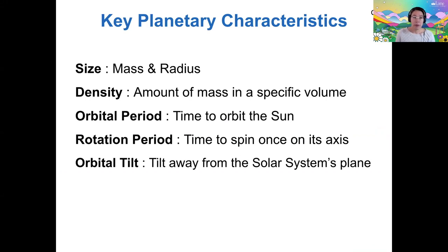First of all, we want to know the size of an object, both in terms of its mass and in terms of its radius. Using that, we'll be able to find the density of an object, and that's basically the amount of mass in a specific volume.